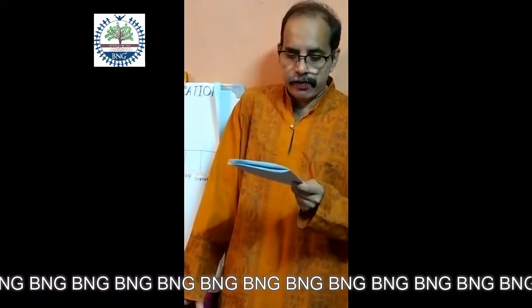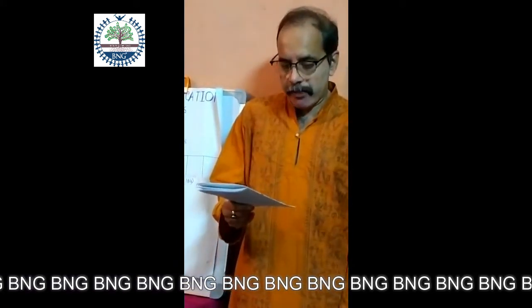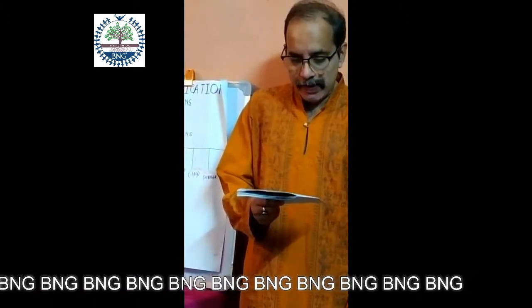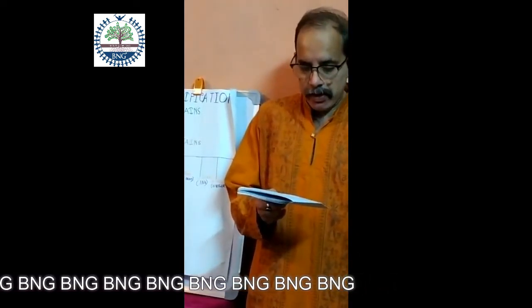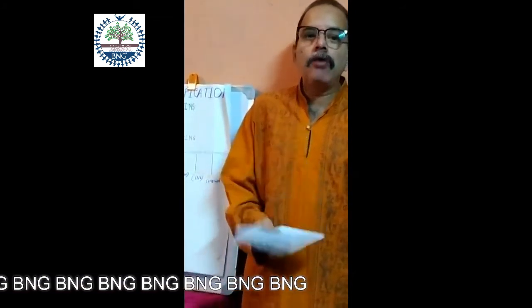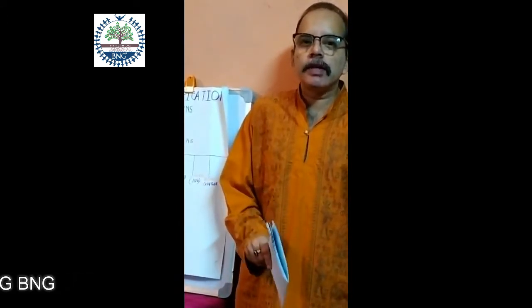First, identify the stain - determine what type of stain it is, whether it is an animal stain, vegetable stain, mineral stain, etc. Second, classify the stain. Third, select a reagent to be used - select the correct agent for the removal of the stain. Fourth, select the procedure to be used - how to remove the stain. Fifth, process step by step for the removal of the stains.